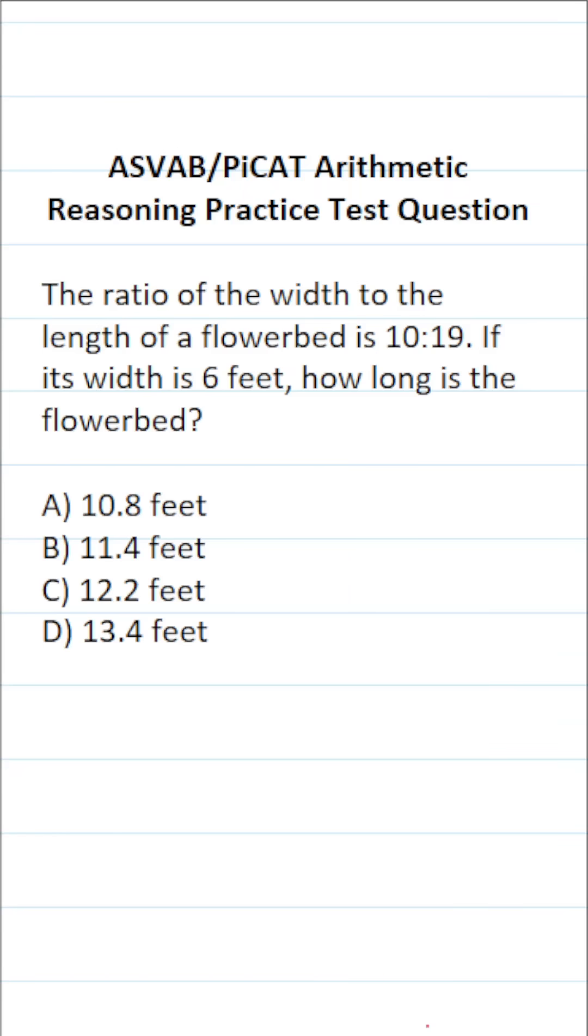This arithmetic reasoning practice test question for the ASVAB and PiCAT says, the ratio of the width to the length of a flowerbed is 10 to 19. If its width is 6 feet, how long is the flowerbed?